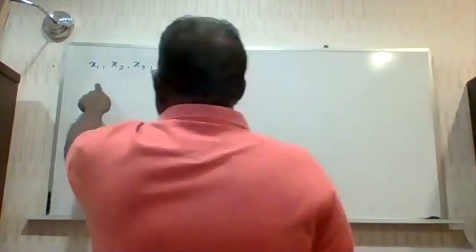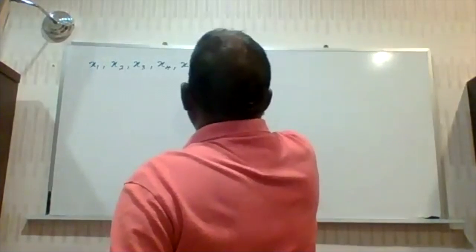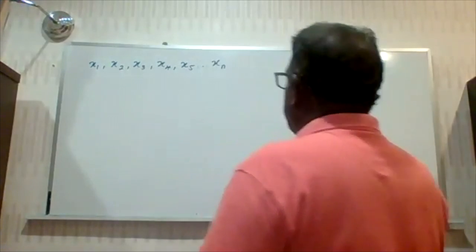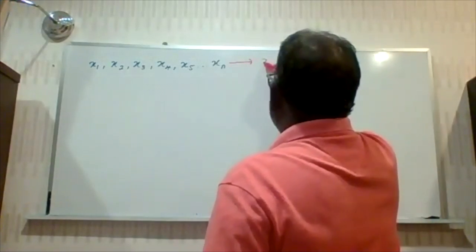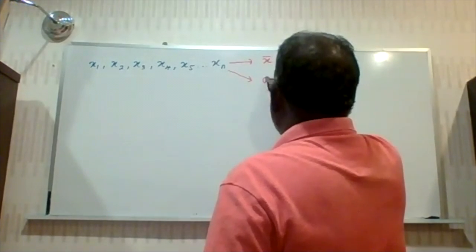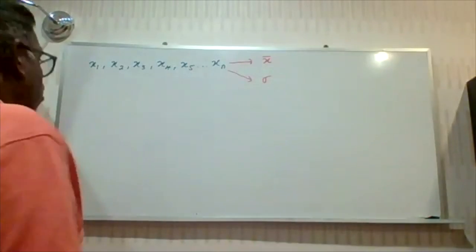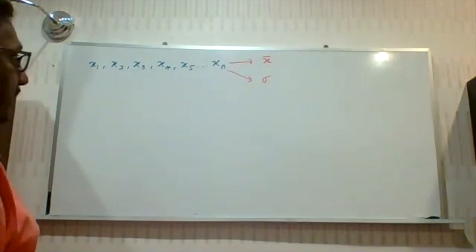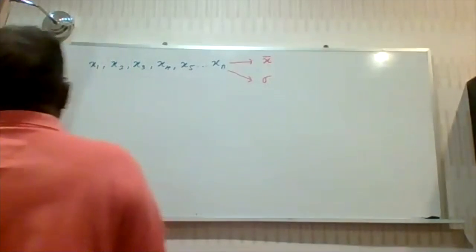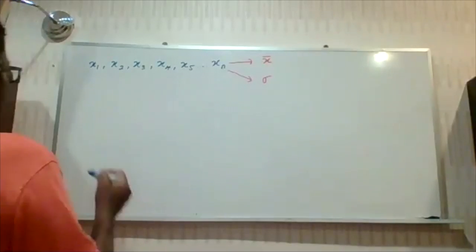Let's say you have a set of data x1, x2, x3, x4, x5, and this goes on up to xn. This data has a mean value of x̄ and a standard deviation of σ. Now the question is: what if a certain constant is added to each of the values?